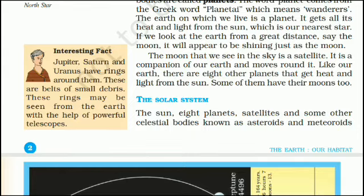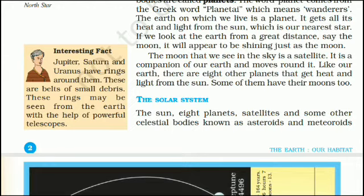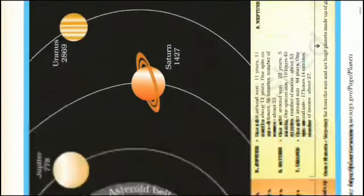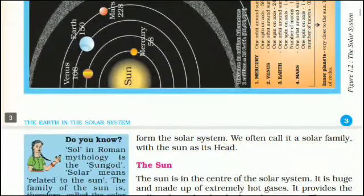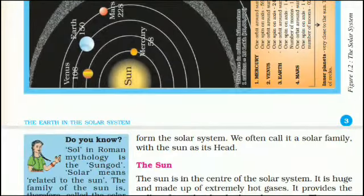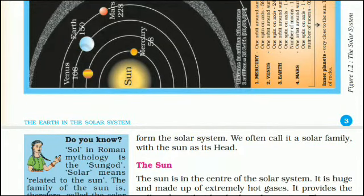Interesting fact: Jupiter, Saturn and Uranus have rings around them. These are belts of small debris. These rings may be seen from the Earth with the help of powerful telescopes. The solar system consists of the sun, eight planets, satellites, and some other celestial bodies known as asteroids and meteoroids. We often call it a solar family, with the sun as its head.